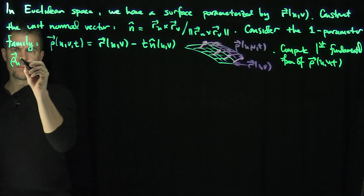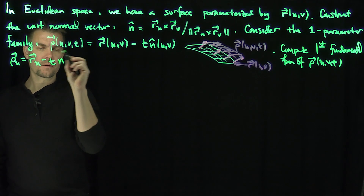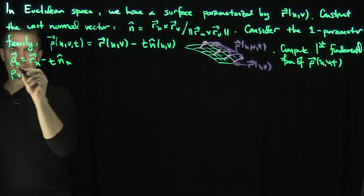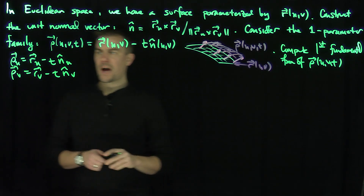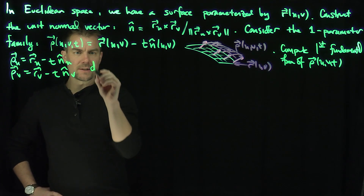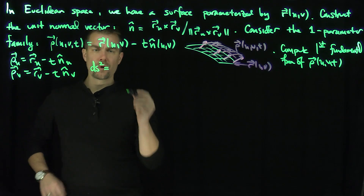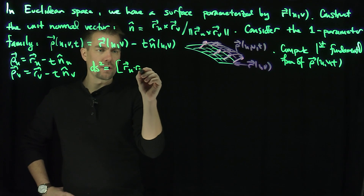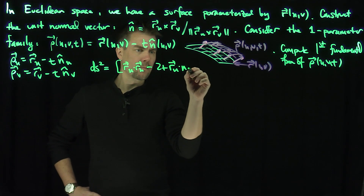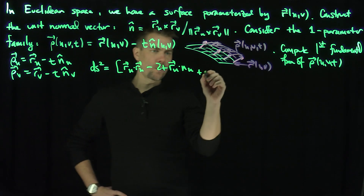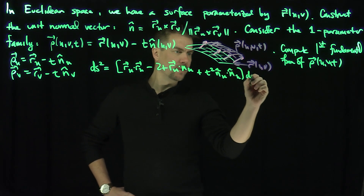So rho_u is going to be r_u minus t times n-hat_u. And rho_v is going to be r_v minus t times n-hat_v. Now what's the first fundamental form? ds squared is going to be rho_u dot rho_u. Expanding that, we'll have r_u dot r_u, minus two t times r_u dot n_u, plus t squared times n_u dot n_u — those are the du squared terms.